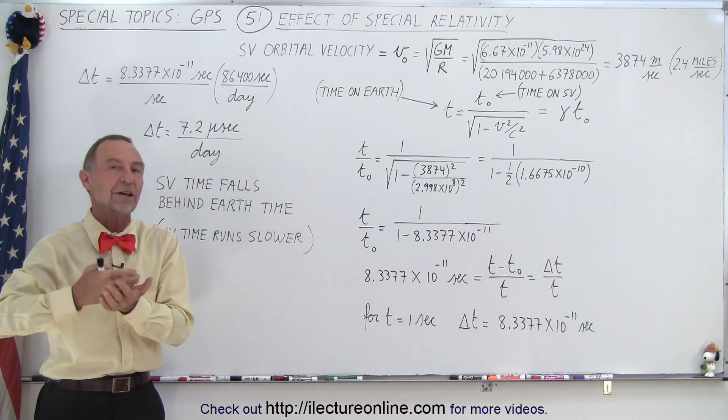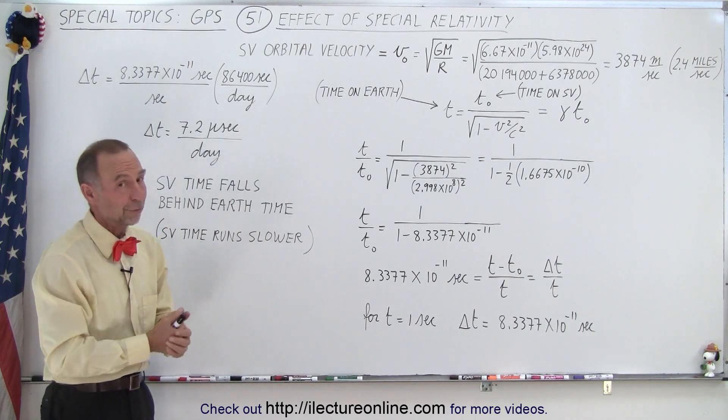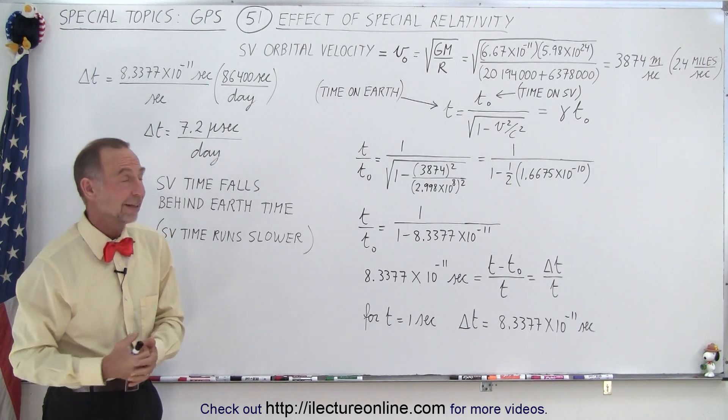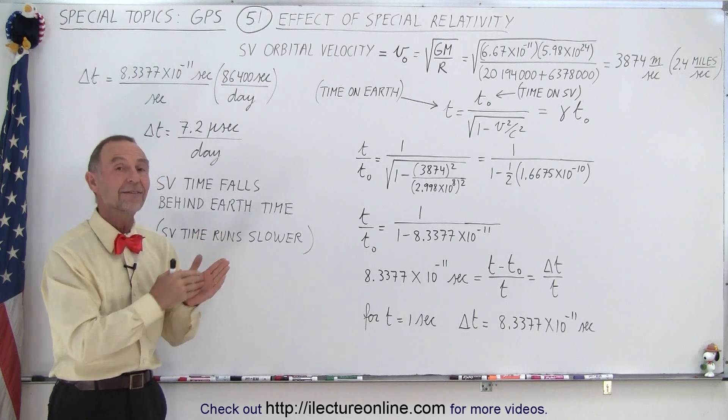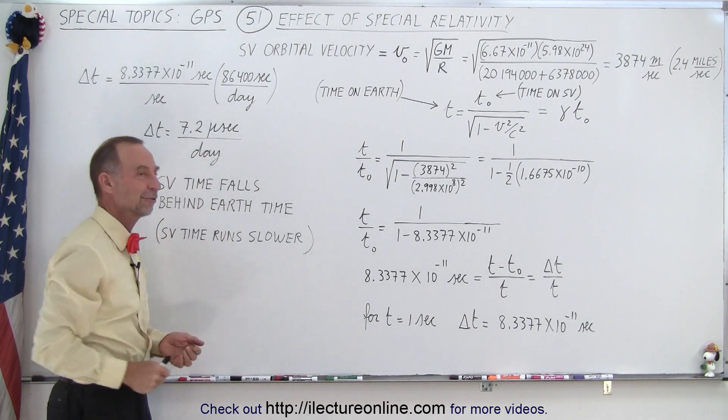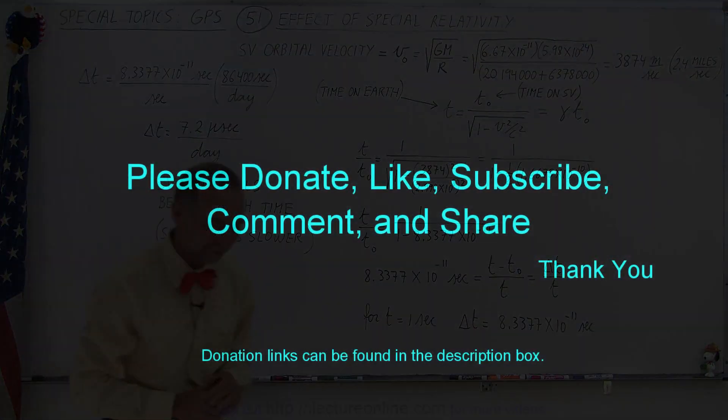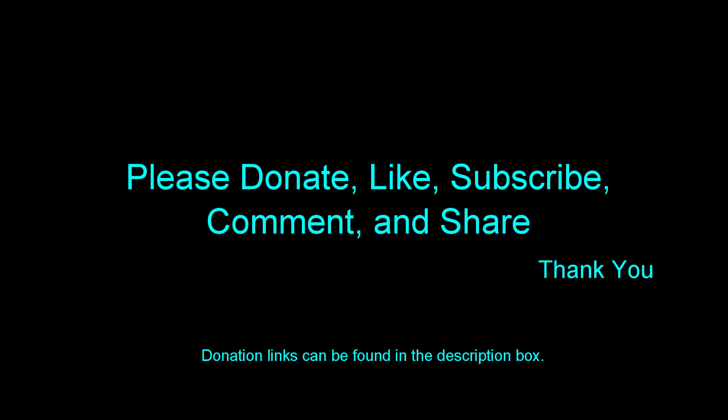The special relativity effect is the effect you get when you travel through space very quickly. 3,874 meters per second is quite fast, and therefore it does affect the time on board the satellites, and we have to adjust for that time difference for GPS to be accurate.